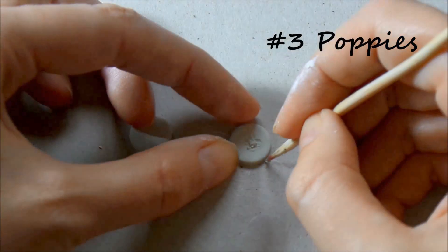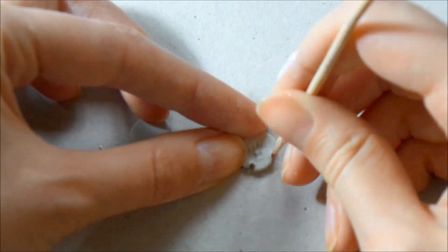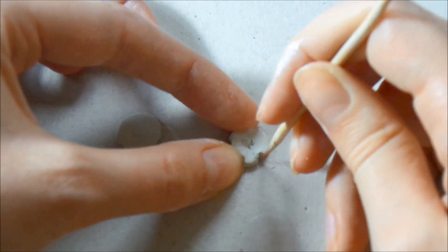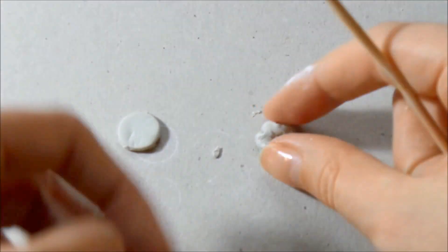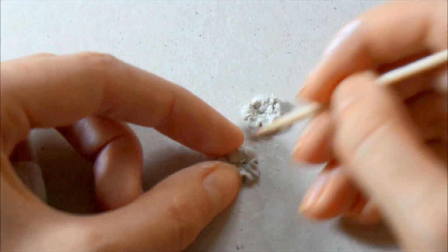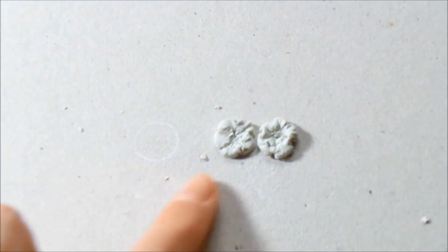To create the flowers, make some small carvings in the middle, then press the toothpick inside the edges forming the petals. It's ok if they don't turn out perfect. They look more realistic this way.